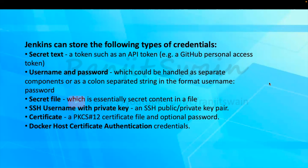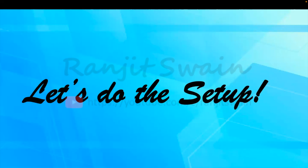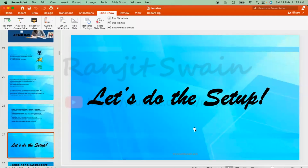Other credential types include a secret file, which is essentially secret content stored in a file; SSH username with private key — an SSH public or private key pair; a certificate such as a PKCS#12 certificate file with optional passwords; or Docker host certificate authentication credentials. There are many things you can store in Jenkins credential management.